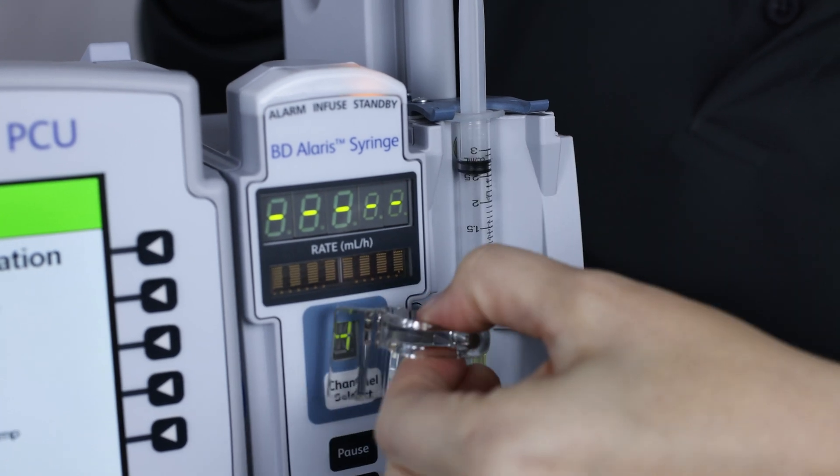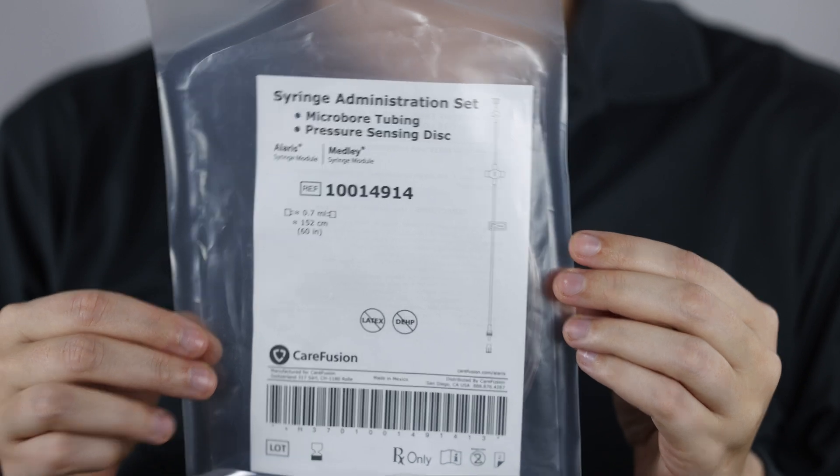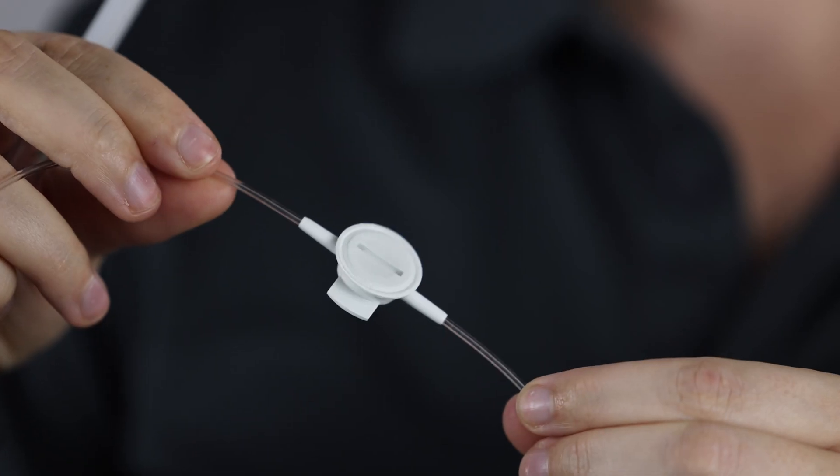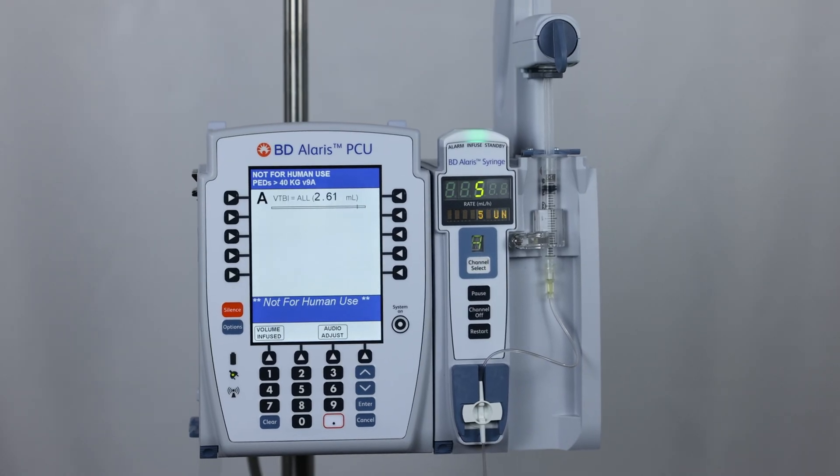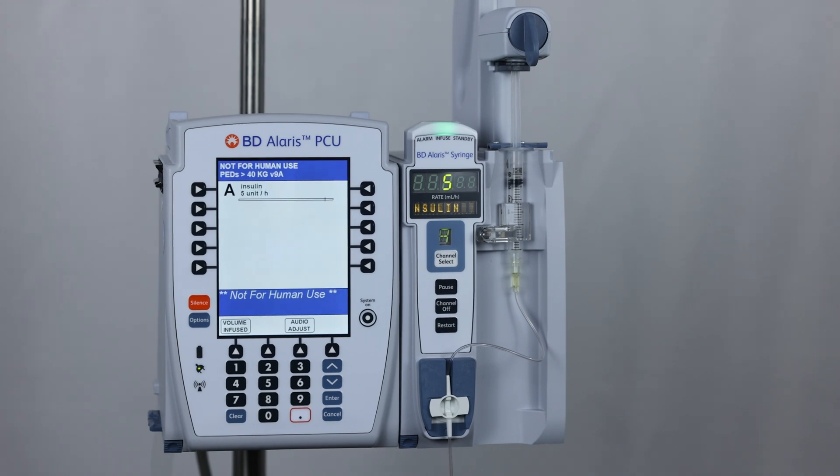Specific tubing sets manufactured by BD are available that include a special sensor disc that closely monitors the pressure inside the line when connected to a patient. The flow rate range for the Alaris 8110 is from 0.01 to 999 milliliters per hour.